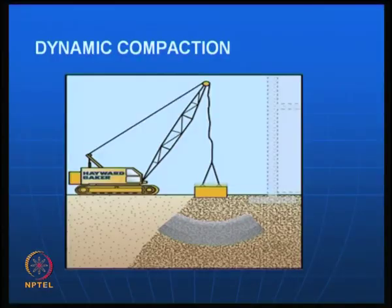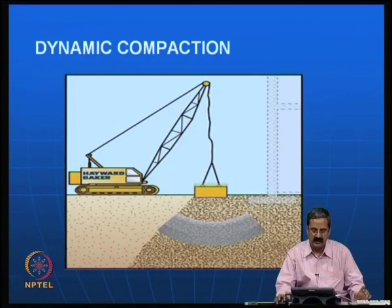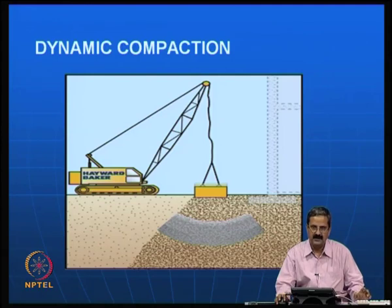What you have seen is dynamic compaction using dynamic methods, where you try to compact as much as 10 meters of the in-situ soil and improve its performance. As mentioned in the previous class, the way it is done is that we have a tamper which will induce energy into the in-situ soil, and this soil becomes strengthened because of the energy impact.